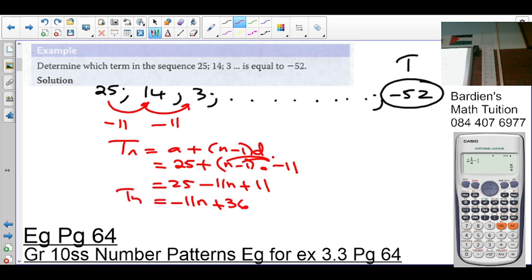Let's get rid of the brackets: 25 minus 11n plus 11. So negative 11n plus 36. That's the general term. We can test it. Let's go for term 3. What is 3 times negative 11? Negative 33 plus 36 equals positive 3. So yes, it works. You guys understand? But have I answered the question? No.